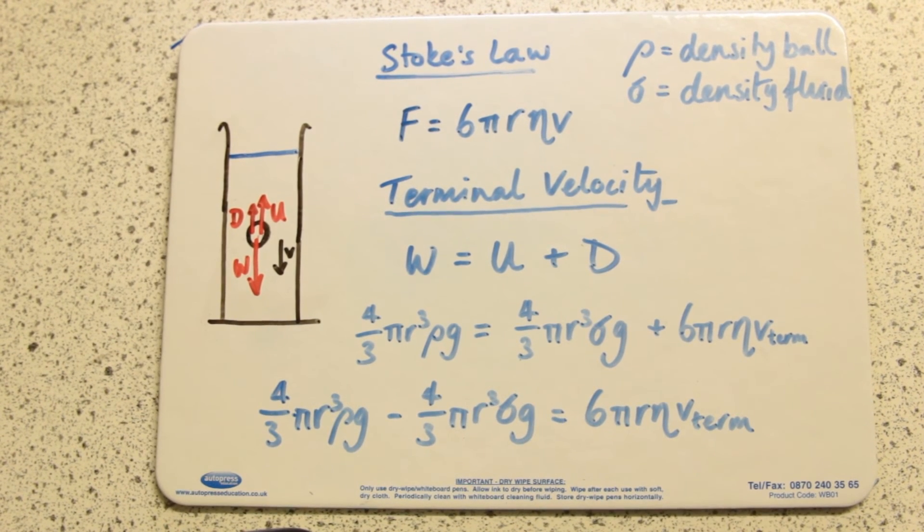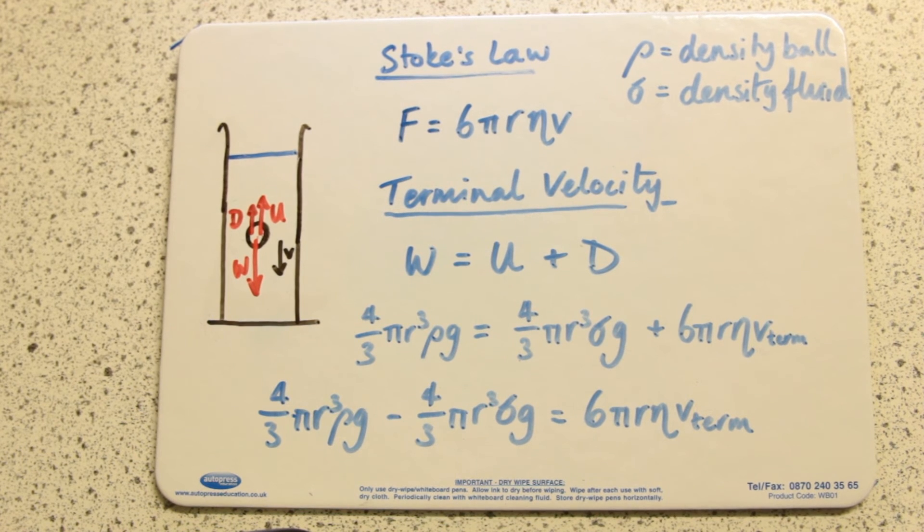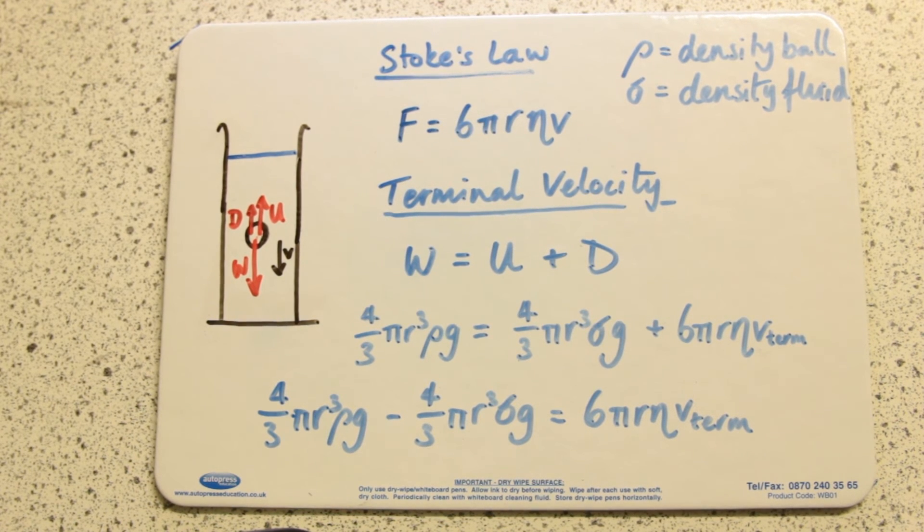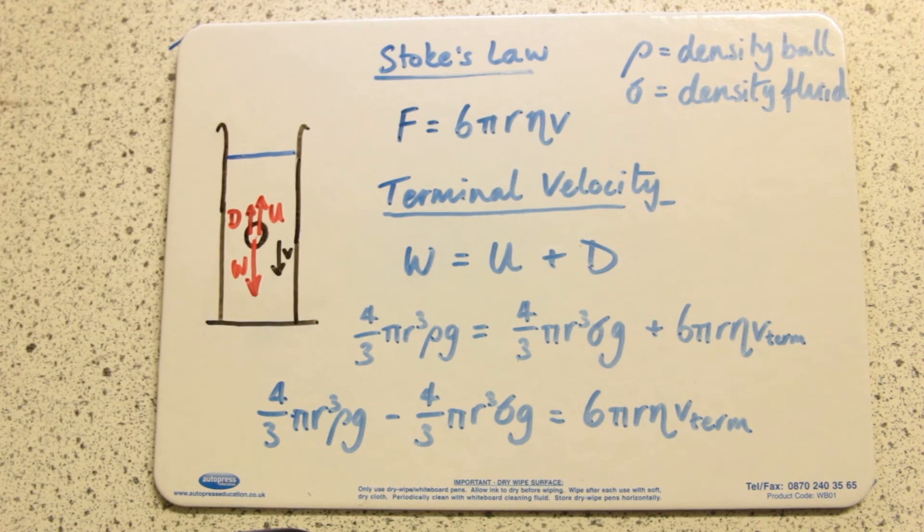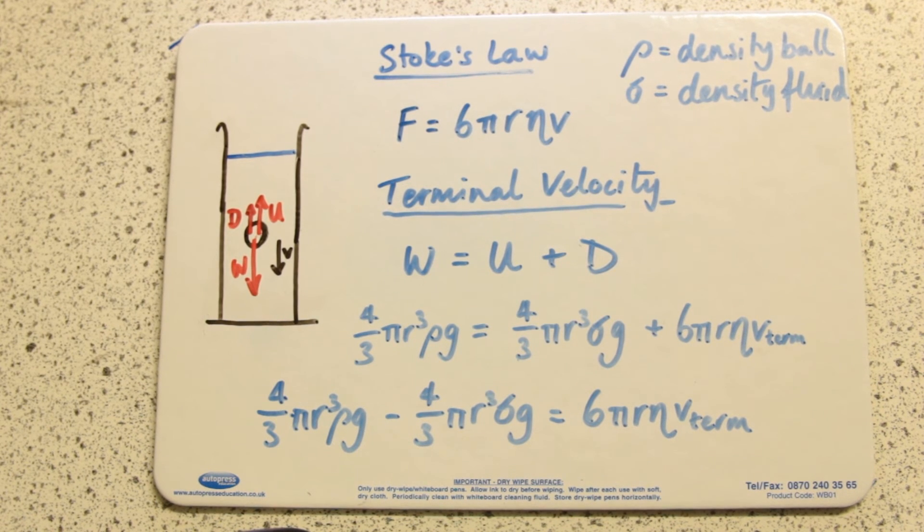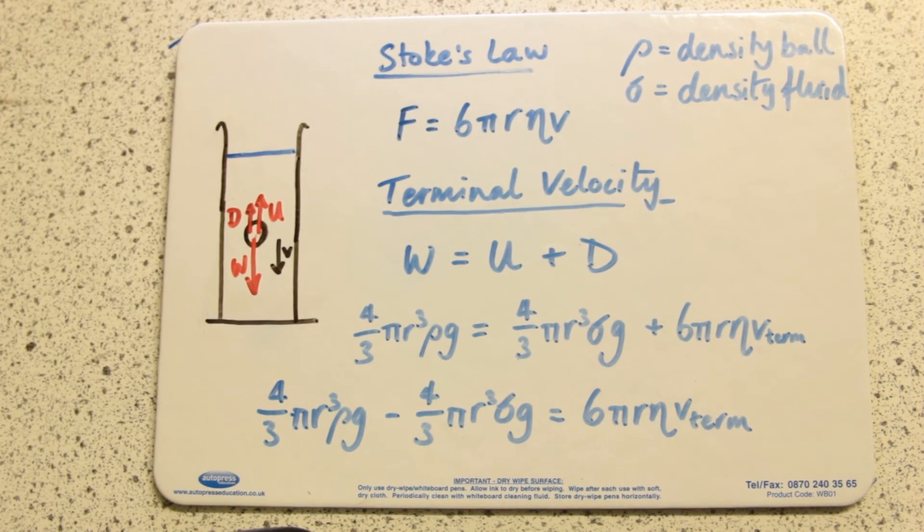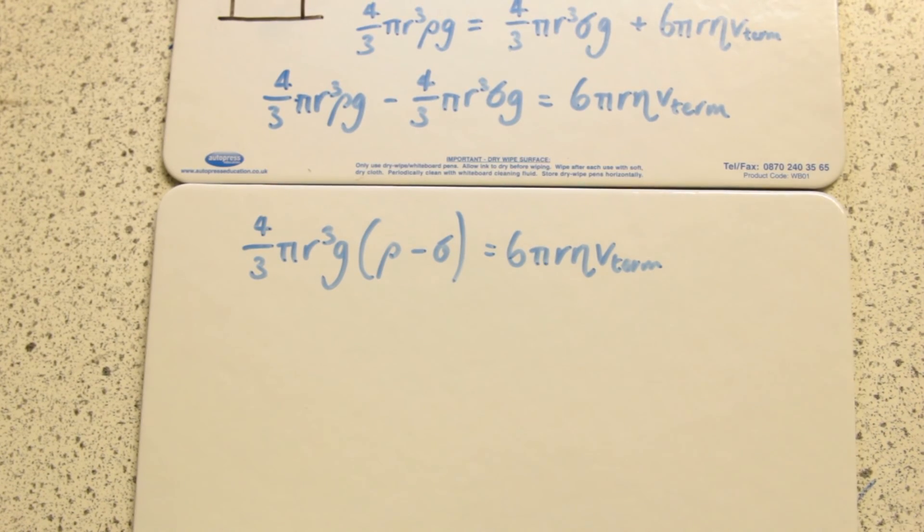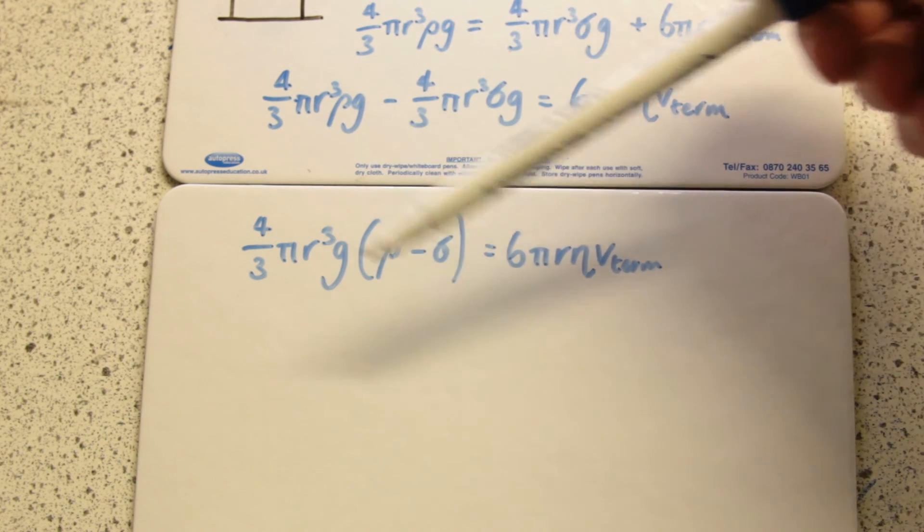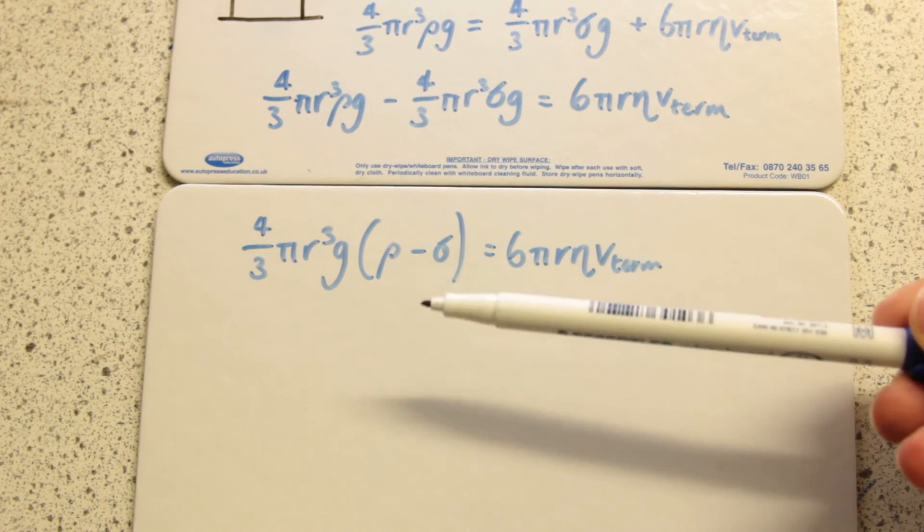I'm going to rearrange by moving my 4/3 πr³σg over to the other side and have V_term on one of the sides. Then I'll factorize, so the 4/3 πr³g is common to both, then rearrange again so we've got an expression for V_term.